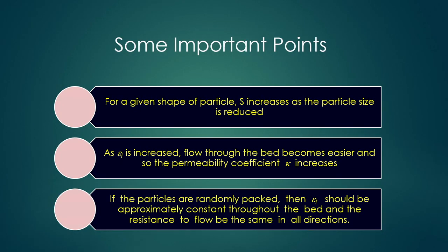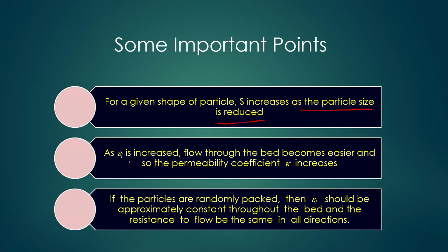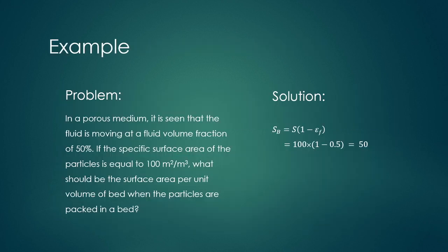Important points to remember: For a given particle shape, S increases as particle size decreases (since S = 6/dp). As epsilon_f (volume fraction of fluid) increases, flow through the bed becomes easier and permeability coefficient κ increases. If particles are randomly packed, the volume fraction of fluid should be approximately constant throughout the bed, and resistance to flow is the same in all directions.